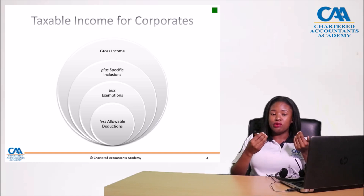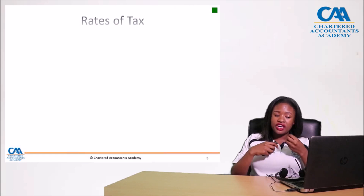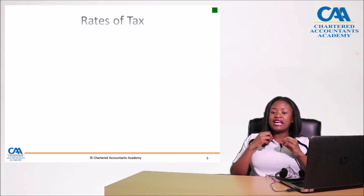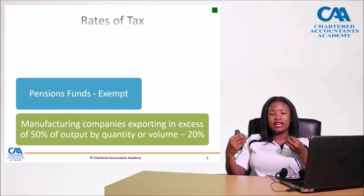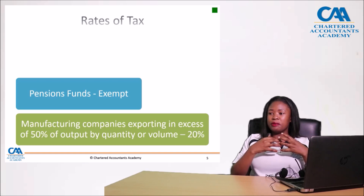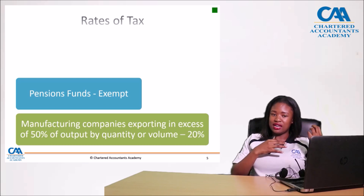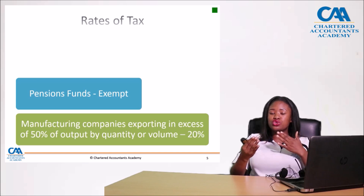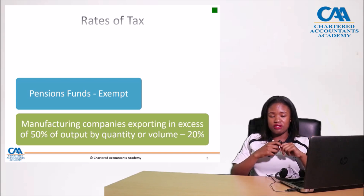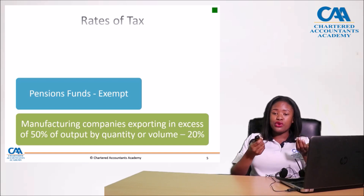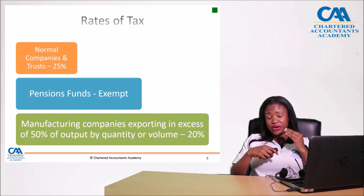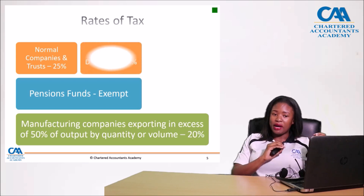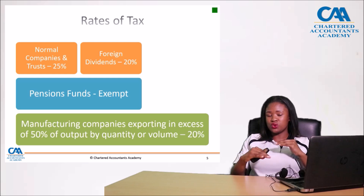For tax rates available for corporates: manufacturing companies exporting in excess of 50 percent of their output are taxed at 20 percent. Pension funds are exempt from tax — they are there for the betterment of society. Normal companies and trusts are taxed at 25 percent. Foreign dividends are taxed at a rate of 20 percent.